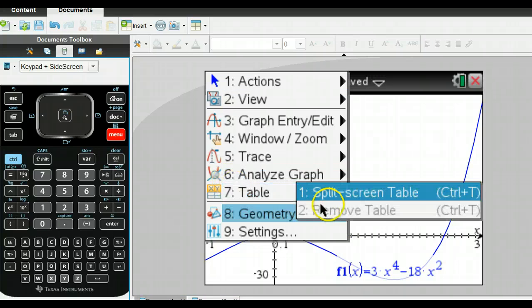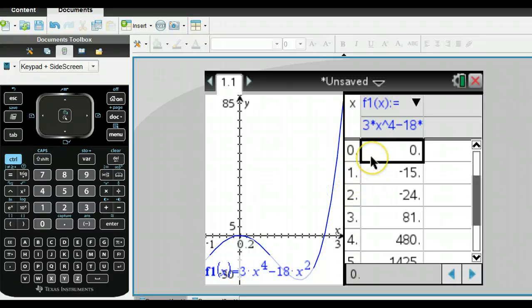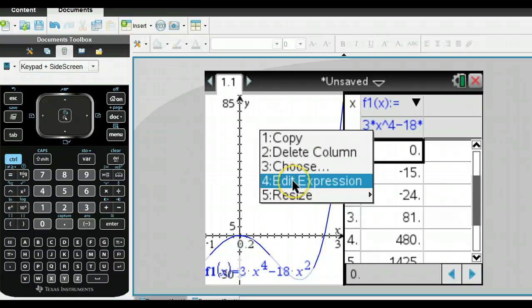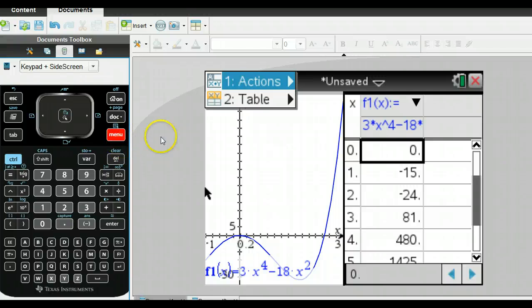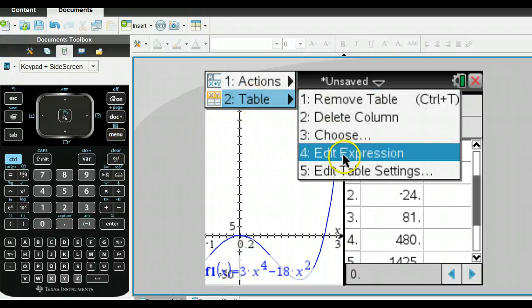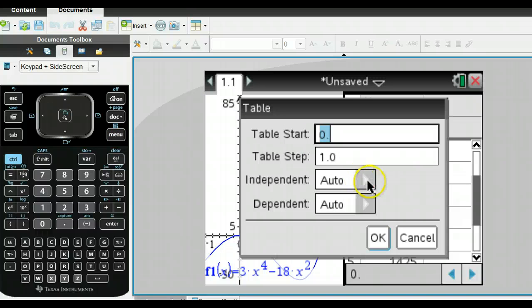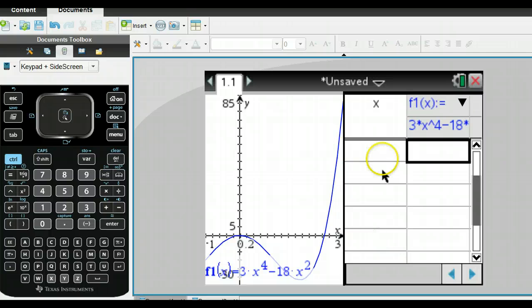And then what I can do also is I can do a table. So I can insert a table here. Split screen table. And so then I can ask for the values here. So with this, what I want to do is I want to go to the menu when I have that table thing going on. And here's my table. Edit table settings. And I want to put in an ask here.